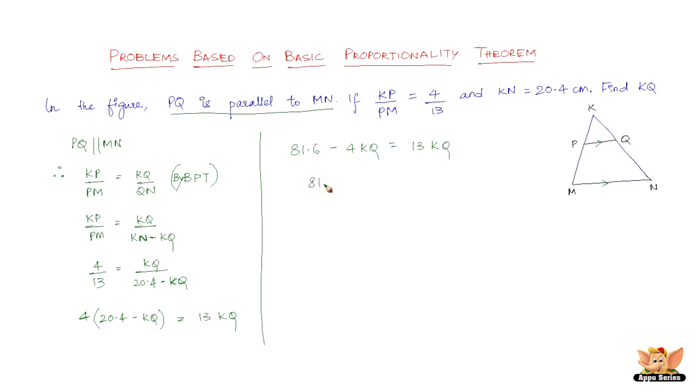So we've got 81.6 = 13KQ plus 4KQ, because the negative 4KQ goes to the right hand side and becomes plus 4KQ. So 81.6 = 17KQ. So, KQ is nothing but 81.6/17, which is nothing but 4.8 centimeters. Hence we found KQ using the concepts of basic proportionality theorem.